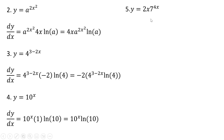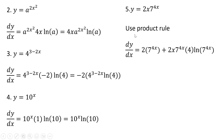Another example — a slightly more complicated one where we'll have to use the product rule. We first take the derivative of 2x, which is 2, and that's multiplied by the exponential function. Then we add to that 2x times the derivative of the exponential function. The derivative of 7 raised to the 4x power is 7 to the 4x multiplied by the derivative of 4x, which is 4, all multiplied by the natural log of 7 raised to the 4x power.